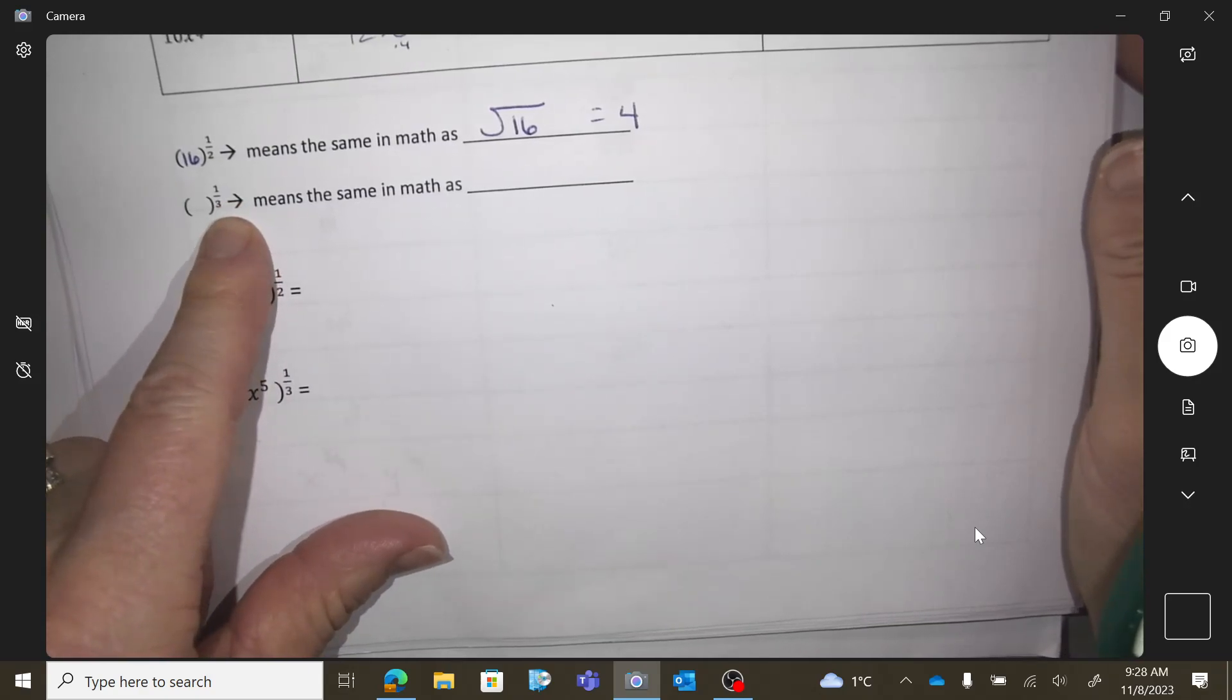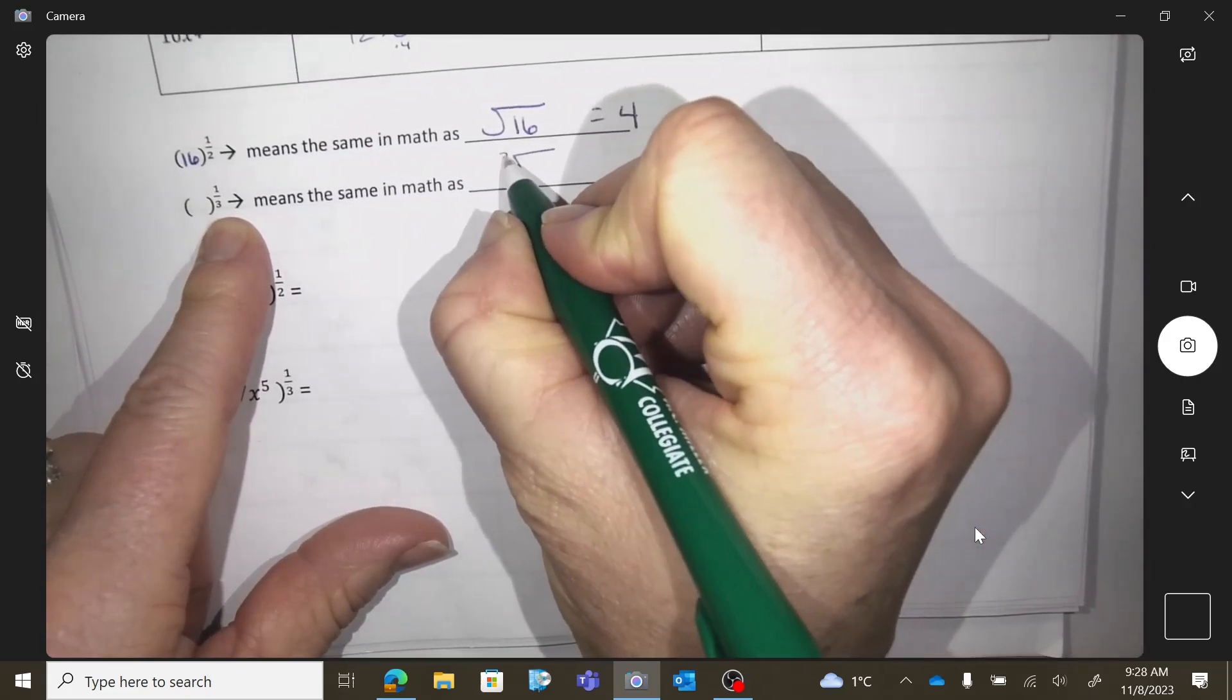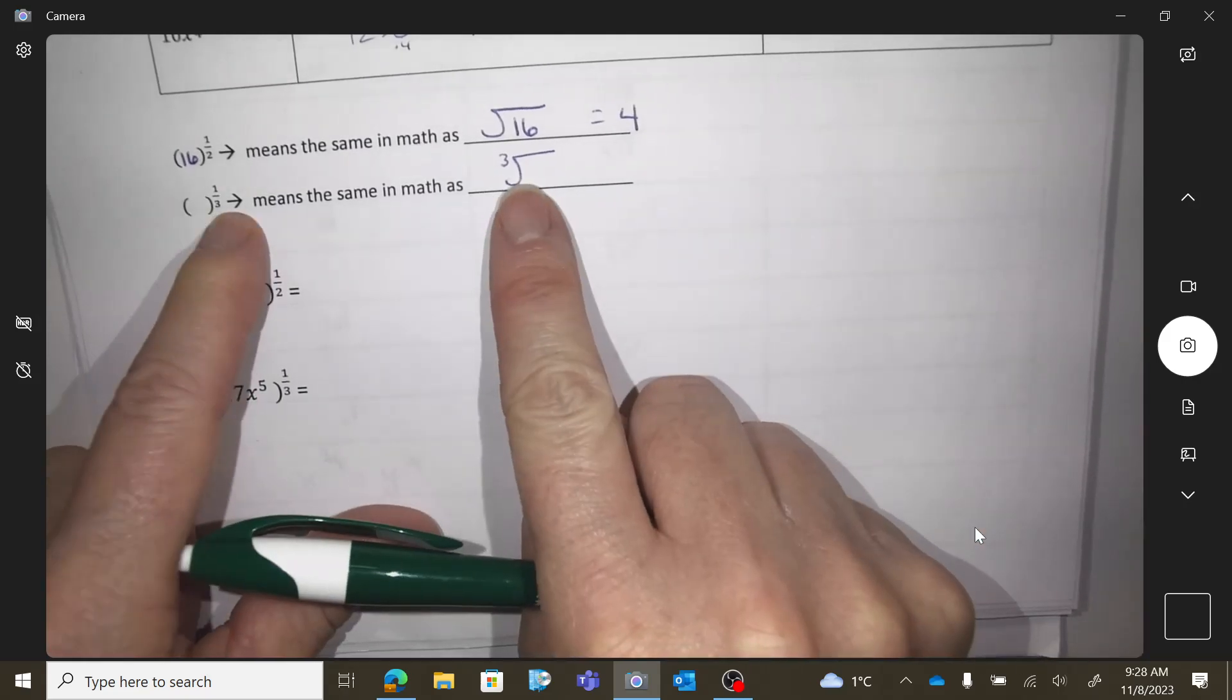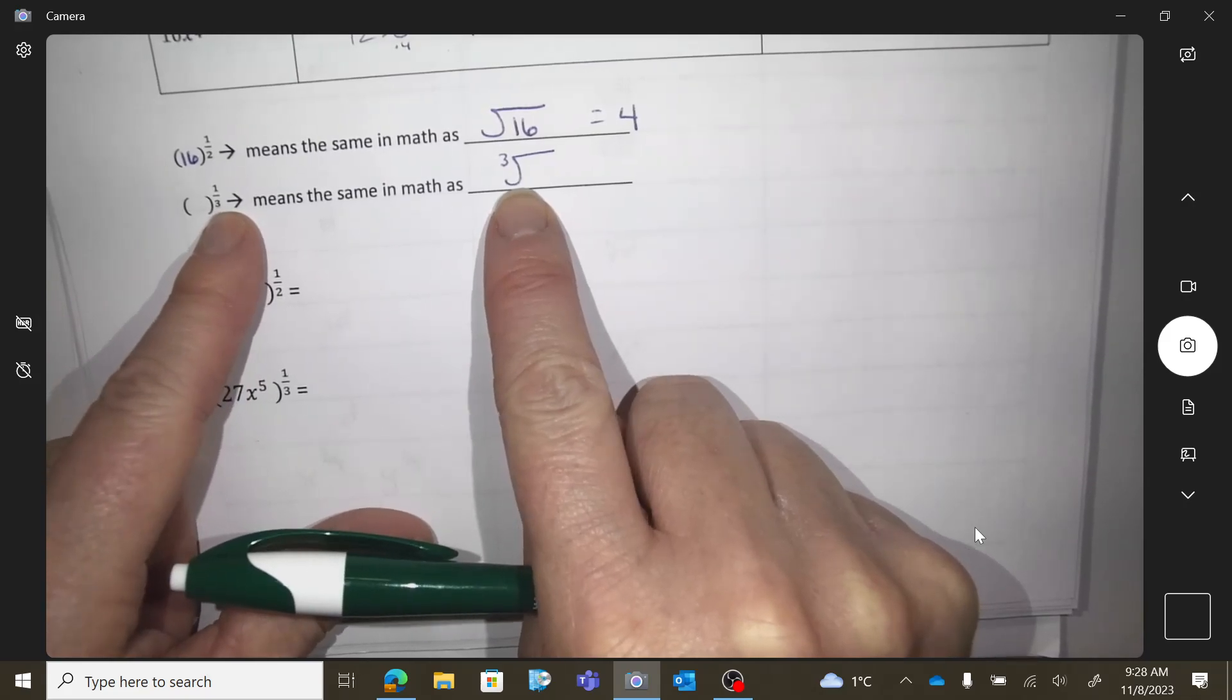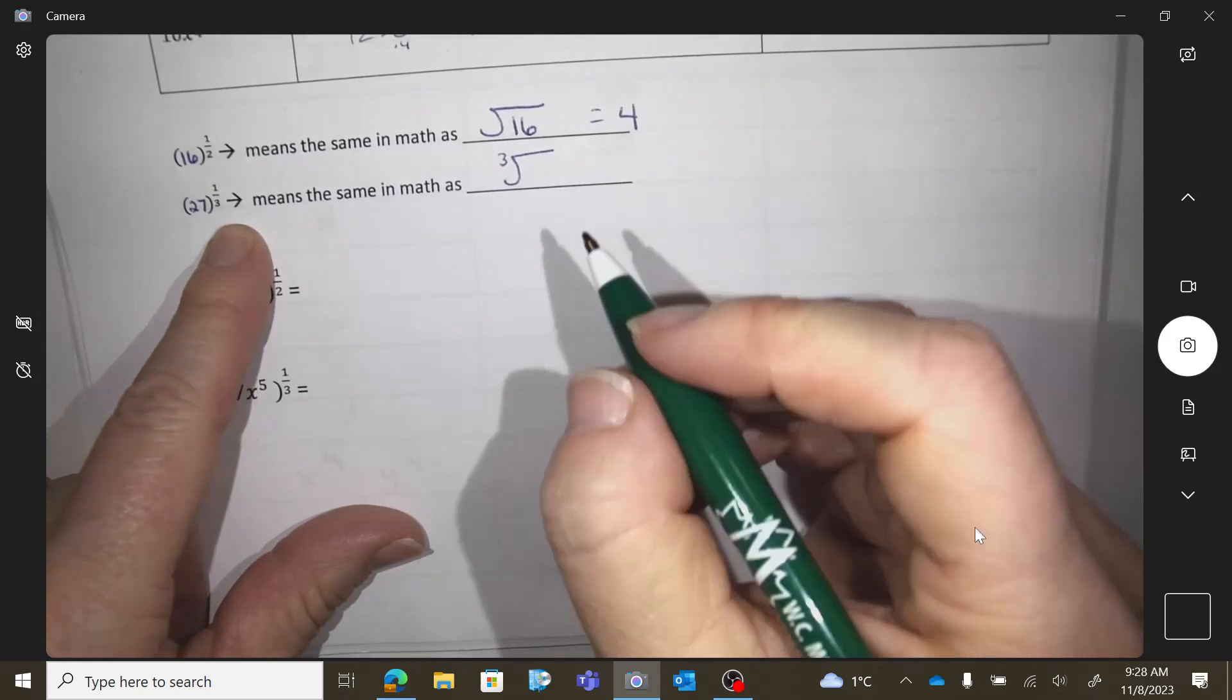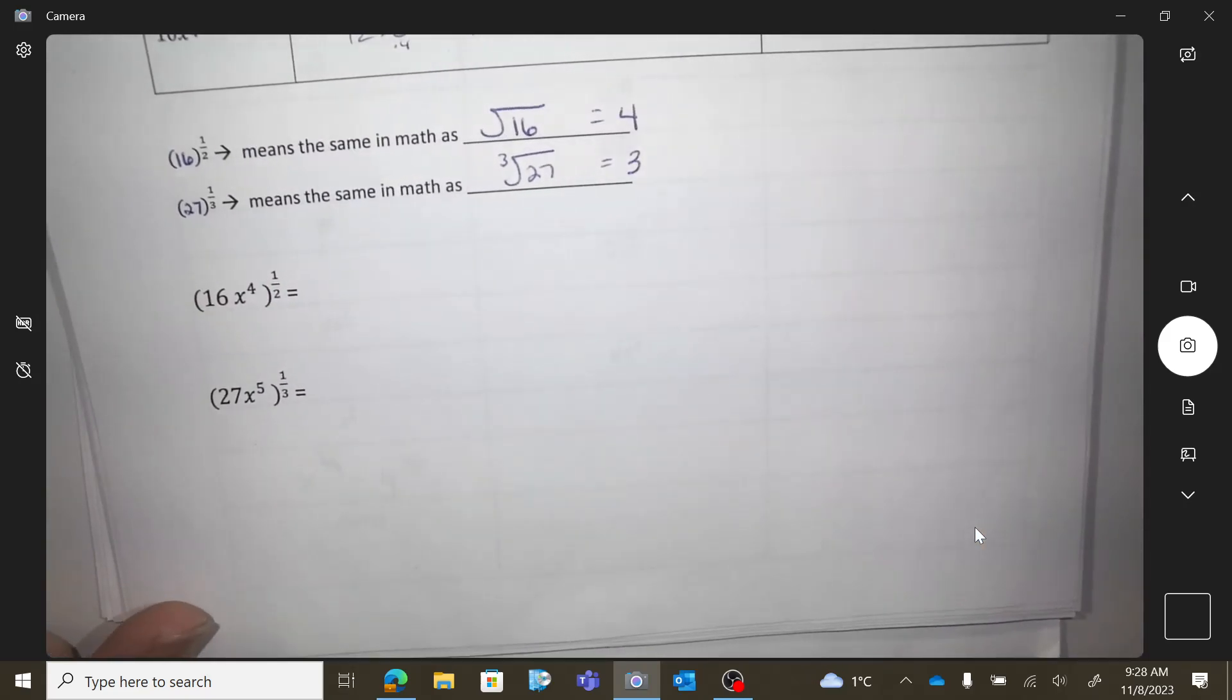So 1 third, what do you think 1 third would be the same math operation as? And this is cubic root. Cubic root. So this exponent is doing this. Okay. So what if I did 27 to the 1 third? I would get 3.